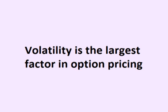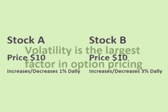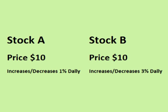Volatility is the largest factor in determining option pricing. Let's say that there are two stocks that are both priced at $10 per share. One of these stocks goes up and down about 1%, or $0.10, each day, and the other stock goes up and down about 3%, or $0.30, each day. Let's say that a trader buys $12 call options on both stocks. This locks in a preset buy price of $12, so this trader is hoping that both stocks rise above $12 before the options expire. The stock that moves around 3% each day on average has a better chance of rising over $12 than the stock that only moves 1% each day on average.